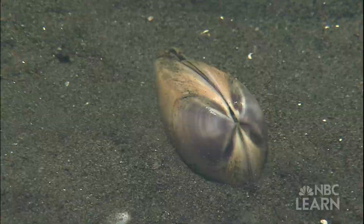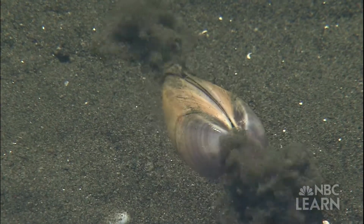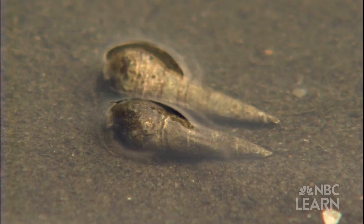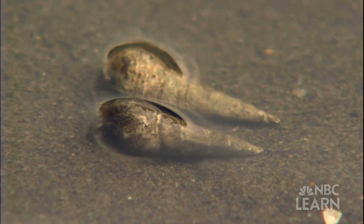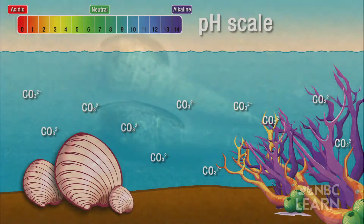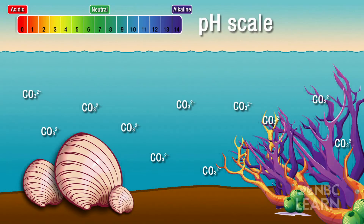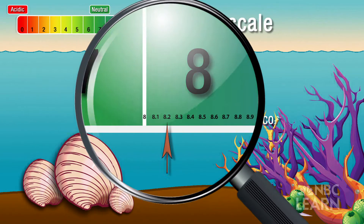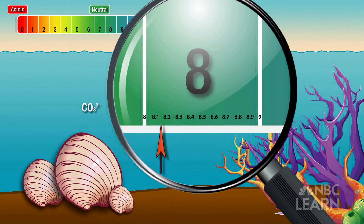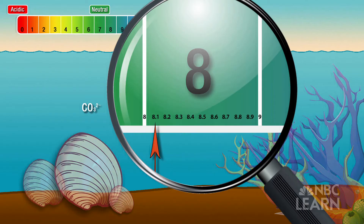Coral and other shell-building organisms, like clams, oysters, and snails, need carbonate to build their shells. As the pH levels in the ocean decrease, fewer carbonate ions are available. The decreased pH of the ocean water also causes the shells of corals and other shell-building organisms to dissolve.